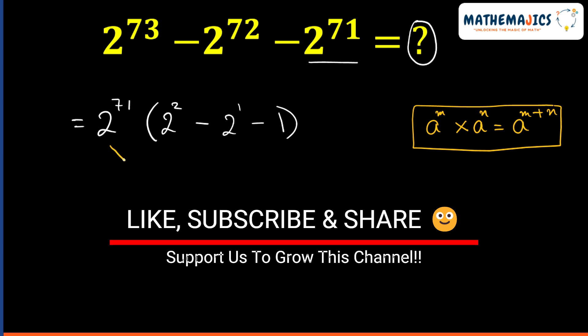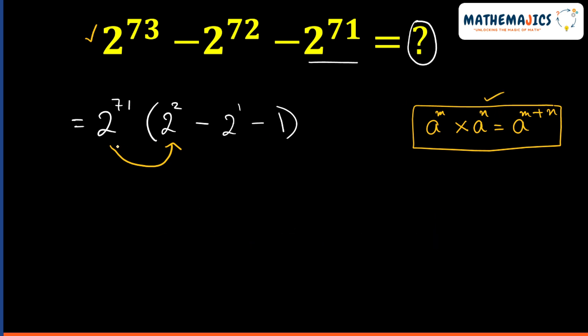Please see, if we multiply 2 raised to power 71 with 2 raised to power 2, we will get 2 raised to power 73 using this exponent rule. Similarly, if I multiply 2 raised to power 71 with 2 raised to power 1, I will get 2 raised to power 72 using this rule again.